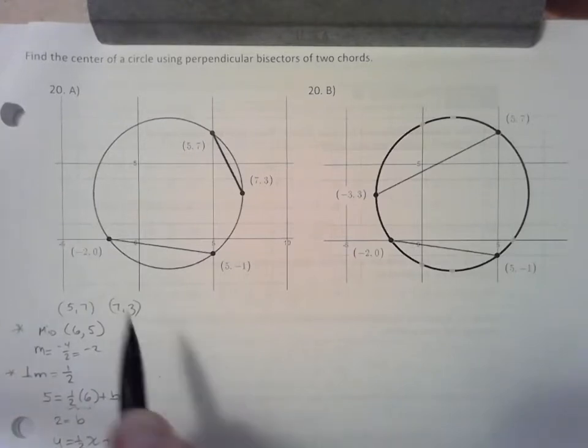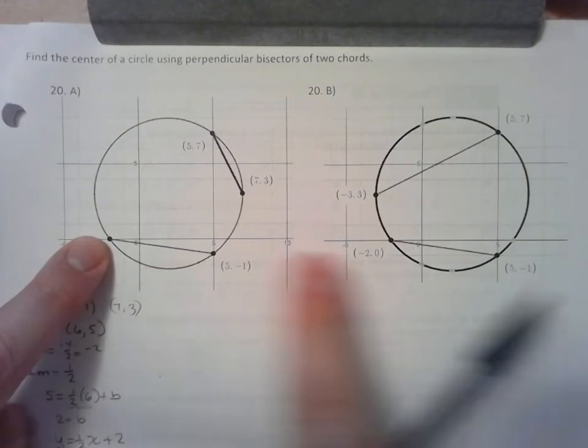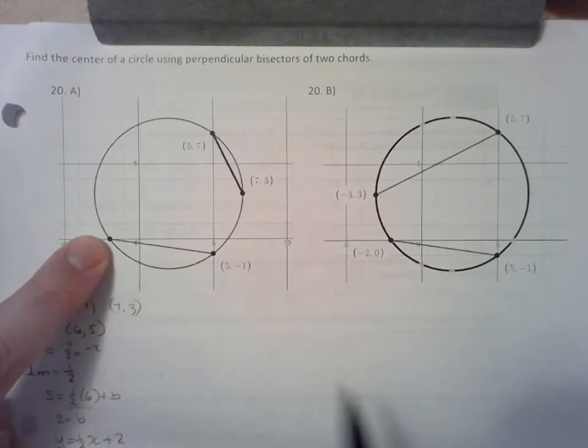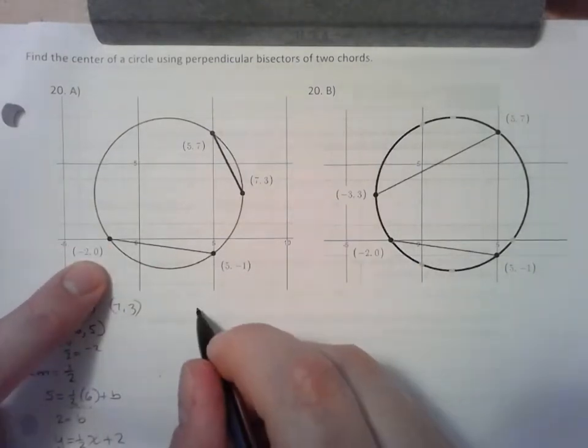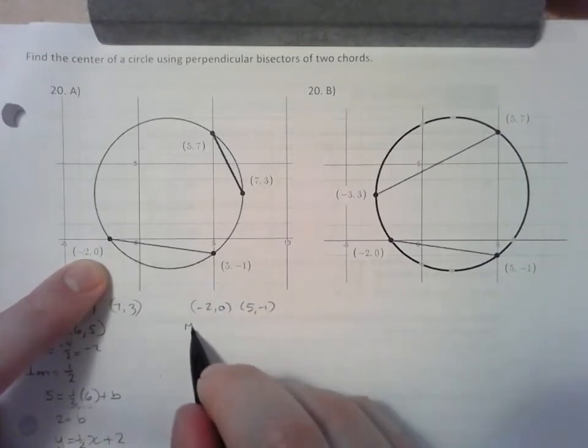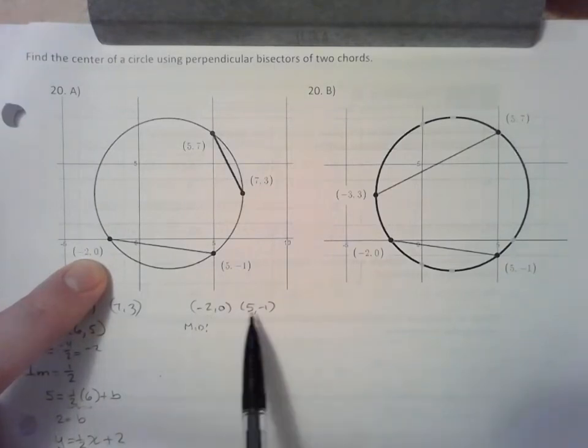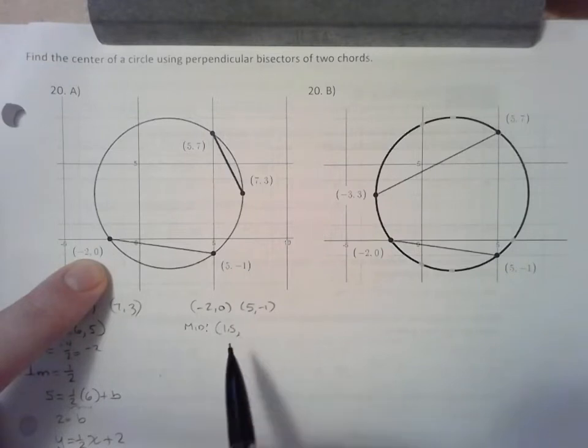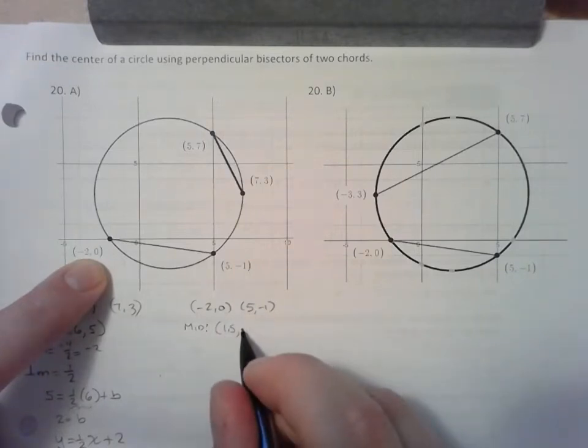Next, I'm going to use the second chord. You can reuse this for the next example if you try this on your own. Taking the points (-2, 0) and positive (5, -1), let's find the midpoint. The average of the X coordinates would be 1.5. A little bit tricky. The average of the Y coordinates would be negative 0.5.